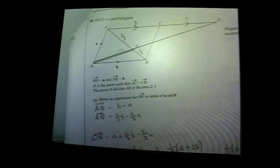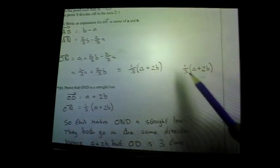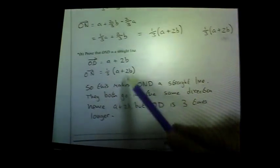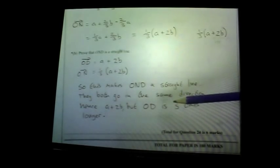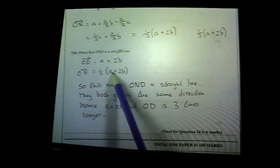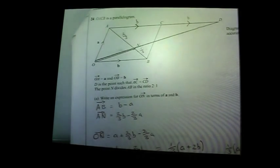Last part: prove that O, N, and D are collinear — on a straight line. OD = a + 2b. ON = ⅓a + ⅔b = ⅓(a + 2b). Since ON is a scalar multiple of OD (specifically one third of it), they point in the same direction, which means O, N, and D are collinear. OD is three times longer than ON. That was your non-calculator paper out of 100 — I hope you did well.